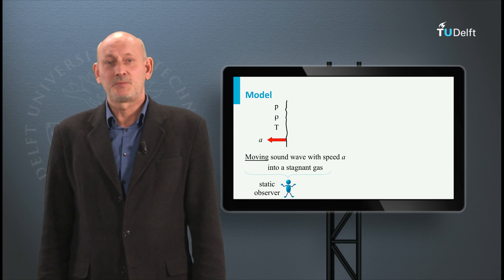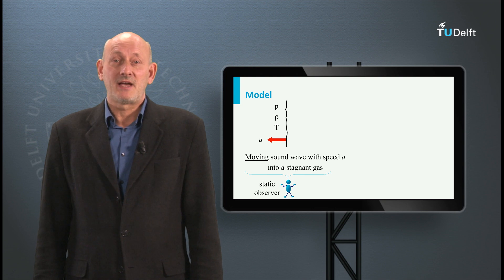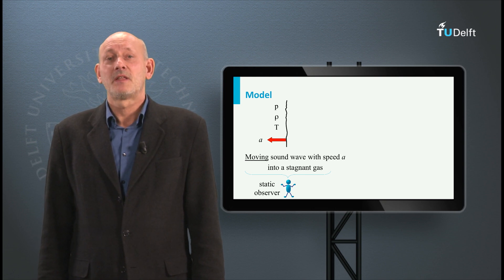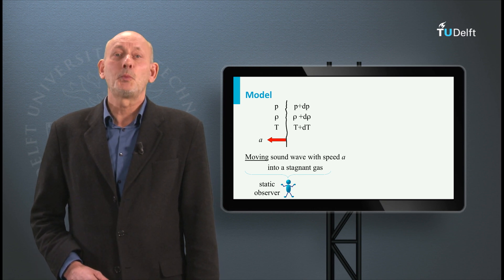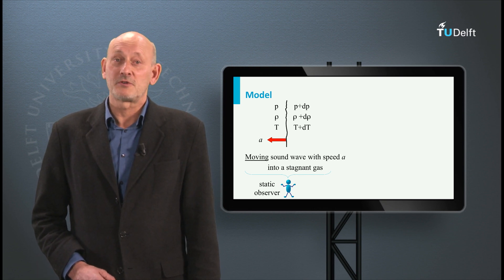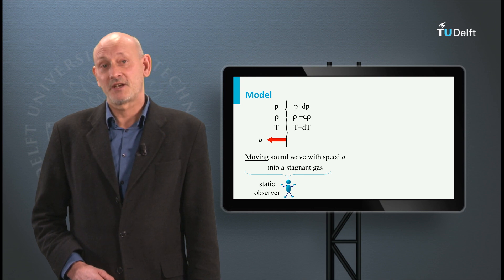The wave moves with the speed A. In front of the wave we have the properties of the gas: the static pressure P, the density rho, and the temperature T. Behind the wave these properties have changed into P plus delta P, rho plus delta rho, and T plus delta T.